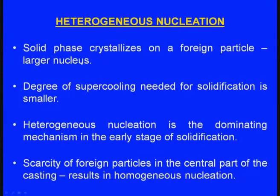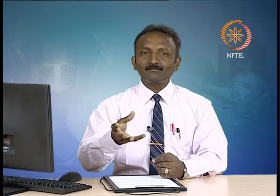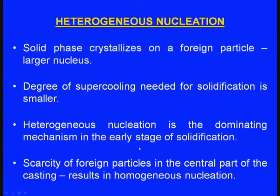In heterogeneous nucleation, the solid phase crystallizes on a foreign particle, resulting in a larger nucleus. Initially there will be some impurities near the mould wall, and around these impurities the metal solidifies into a larger nucleus. A degree of supercooling is needed for solidification. At the early stage, heterogeneous nucleation dominates near the mould wall. As solidification progresses inward and impurities become scarce, homogeneous nucleation takes over.